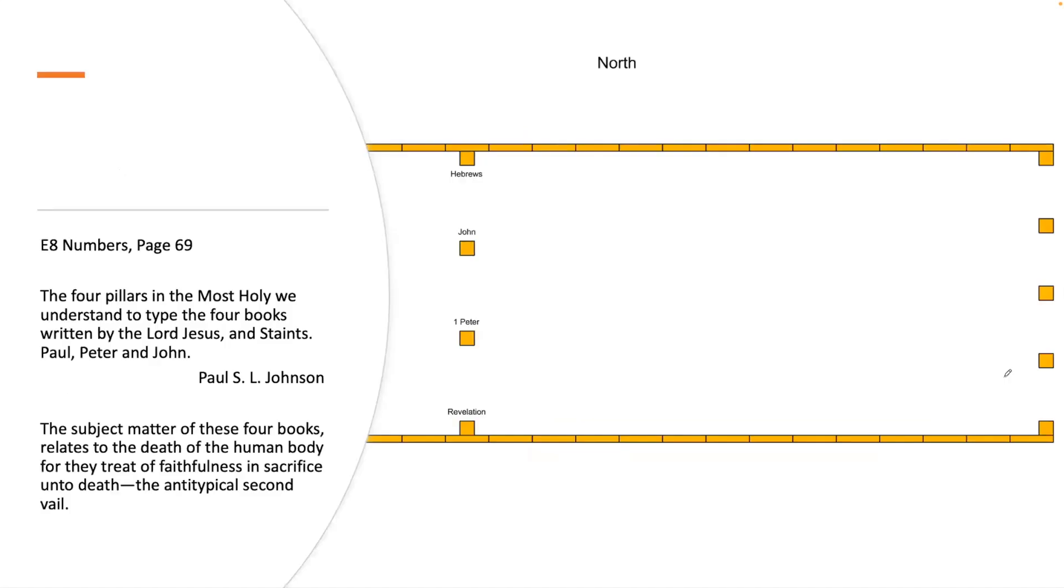The four pillars in the Most Holy we understand to type the four books written by the Lord Jesus and the saints Paul, Peter, and John. The subject matter of these four books relates to the death of the human body, for they treat of faithfulness in sacrifice unto death—the antitypical second veil.